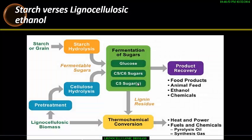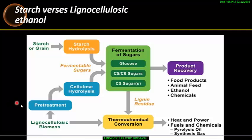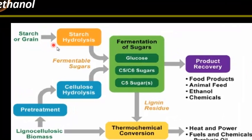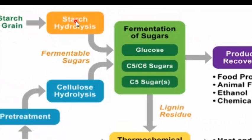The bioprocessing of starch-based ethanol production is different from lignocellulosic bioethanol production — that's why there is a problem. In starch-based ethanol production, no pre-treatment is required. There is liquefaction and then fermentable sugar can be obtained directly — glucose, which are carbon-6 sugars — and they can be utilized directly for fermentation for ethanol production.